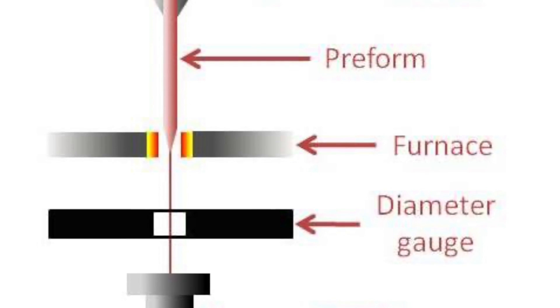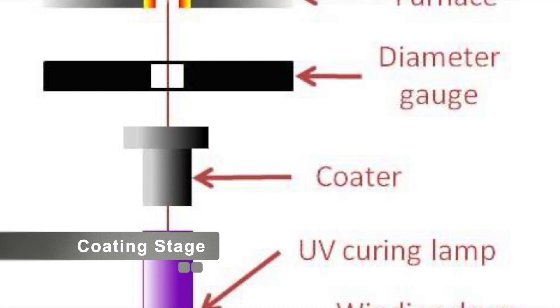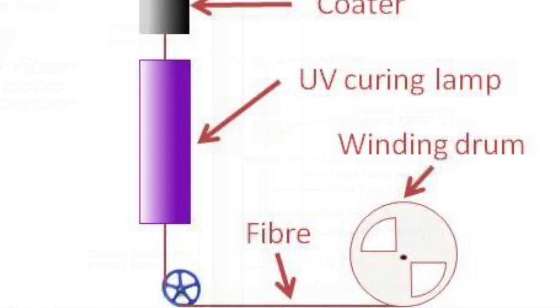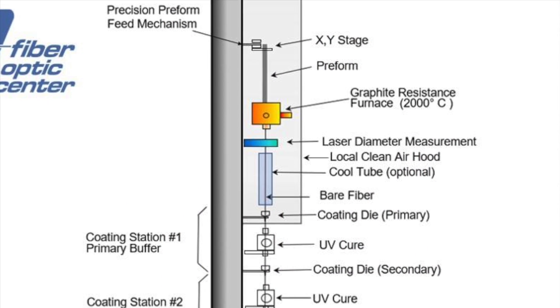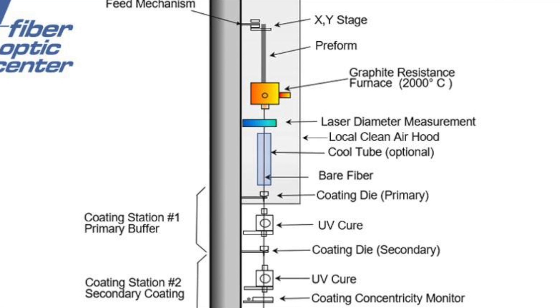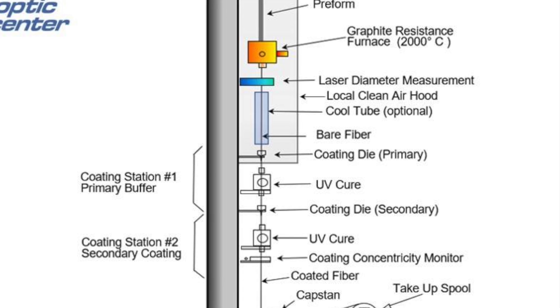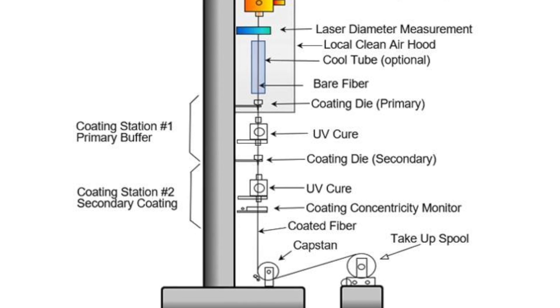After the fiber is drawn, it passes through a series of coating stages. These coatings protect the delicate glass fiber from physical damage and environmental factors. The primary coating is a soft, UV-cured polymer that cushions the fiber. This is followed by a secondary, harder coating that provides additional protection. Both coatings are applied in a single, continuous process and cured using ultraviolet light.